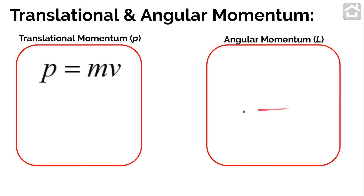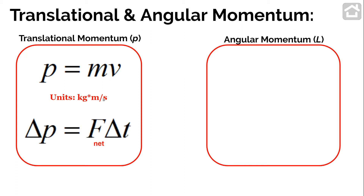Remember, translational momentum P is defined as the product of an object's mass and its velocity, with units of kilograms times meters per second. The change in momentum equals the net external force multiplied by time. The rotational equivalent is angular momentum, which we represent with a capital L.